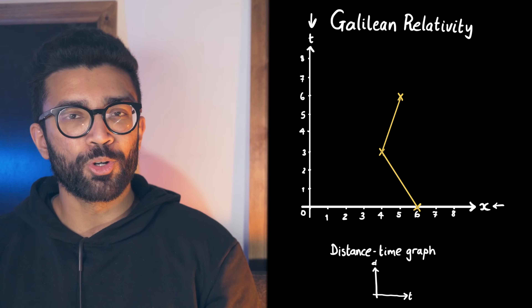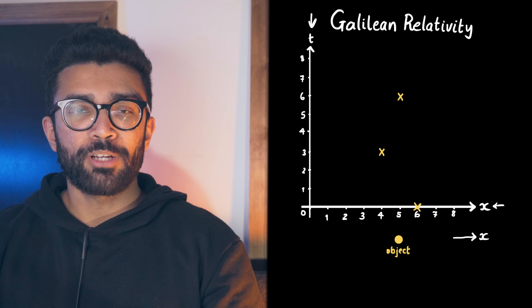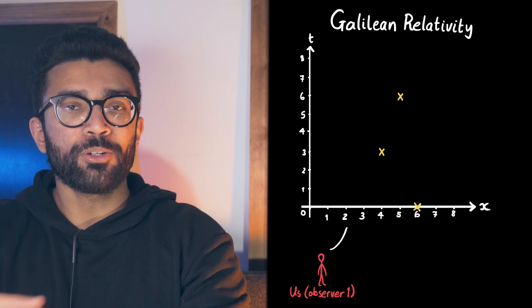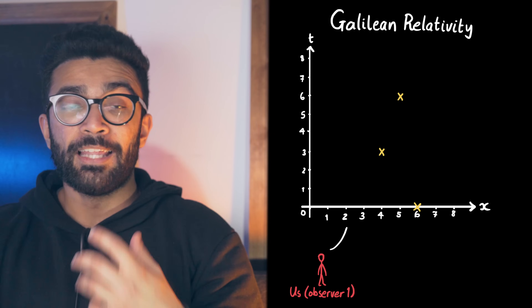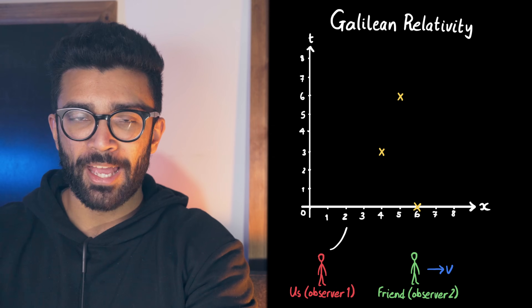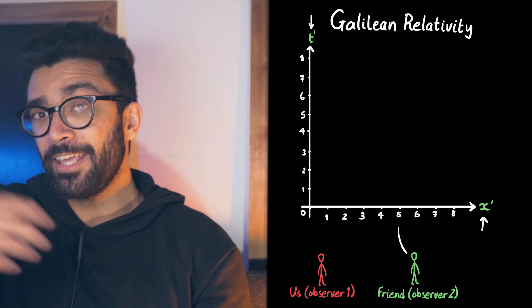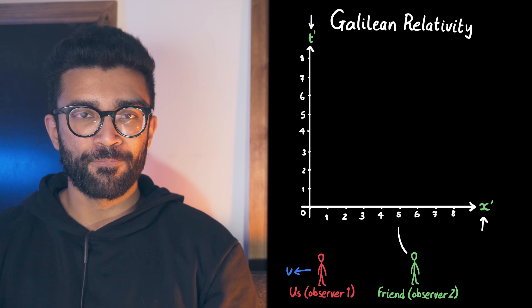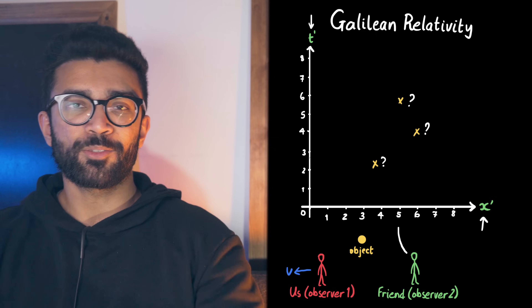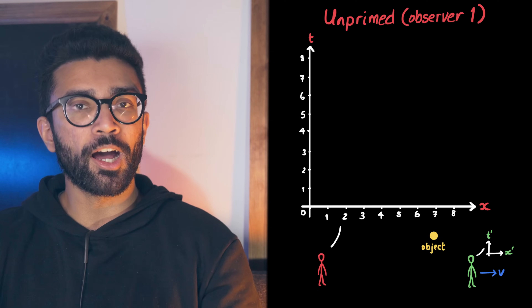Usually we do it the other way around, but here it's more convenient to plot x along the horizontal direction so it matches the actual motion in real space. So just to recap, what we're doing here is seeing how an object moves from our reference frame in which we are stationary. We could, however, also deal with another reference frame. Let's say our friend is moving relative to us in the x-direction at a speed v. We can call their axes x-primed and t-primed to differentiate them from our axes. And remember, from their perspective, they are stationary and we are moving this way with speed v.